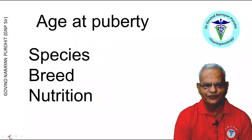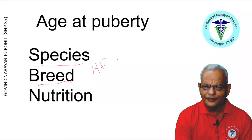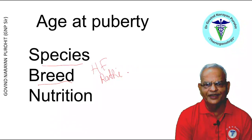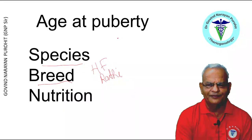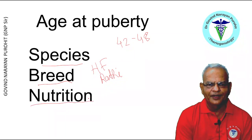Puberty is known to be affected by a lot of things: the species, the breed — maybe the Holstein breed, they have puberty at a lower age as compared to the Rathi or other indigenous breeds, which have a higher age at puberty. If we talk of the buffalo heifers, the age at puberty is much more — 42 to 48 months in most buffalo heifers. Puberty is also largely affected by nutrition.